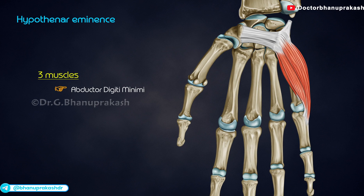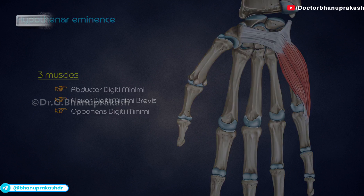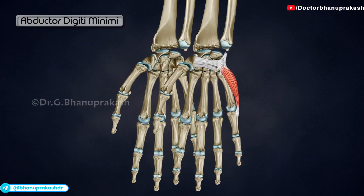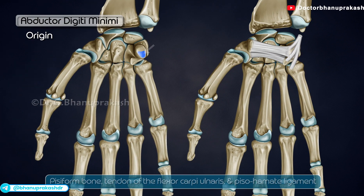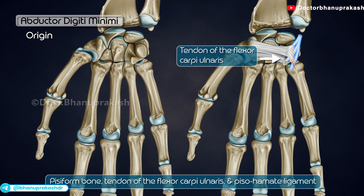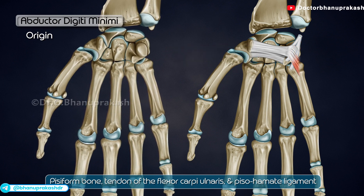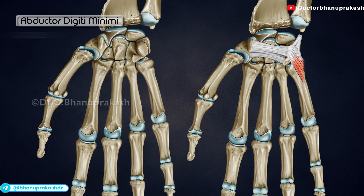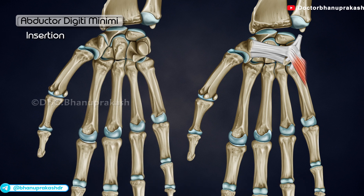Abductor digiti minimi, flexor digiti minimi brevis, and opponens digiti minimi. Abductor digiti minimi originates at the pisiform bone, tendon of the flexor carpi ulnaris, and pisohamate ligament. It is inserted by two slips.